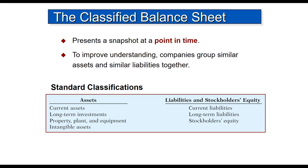The classified balance sheet is one in which we classify the assets into four different categories: current assets, long-term investments, property, plant and equipment, and intangible assets. We also classify the liabilities into those that are current and those that are long-term. This makes it easier for the person reading the financial statements to better understand the status of the different assets and liabilities.